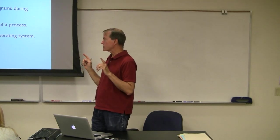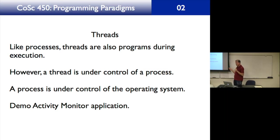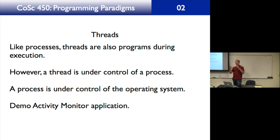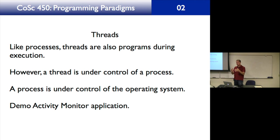Now let's talk about the difference between a thread and a process. Like processes, threads are also programs during execution. However, a thread is under control of a process, whereas a process is under control of the operating system. When you write a main program, the operating system runs your main program, and then your program spawns threads. The threads are under the control of the main program, which is under control of the operating system. It is the operating system scheduler that schedules the threads, not the program itself.